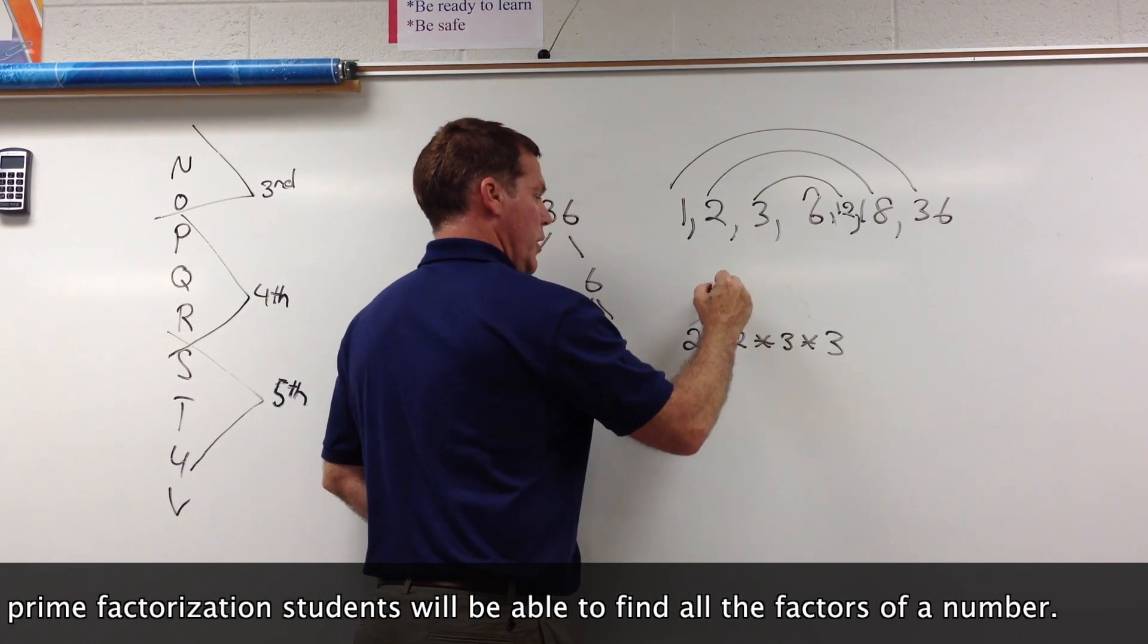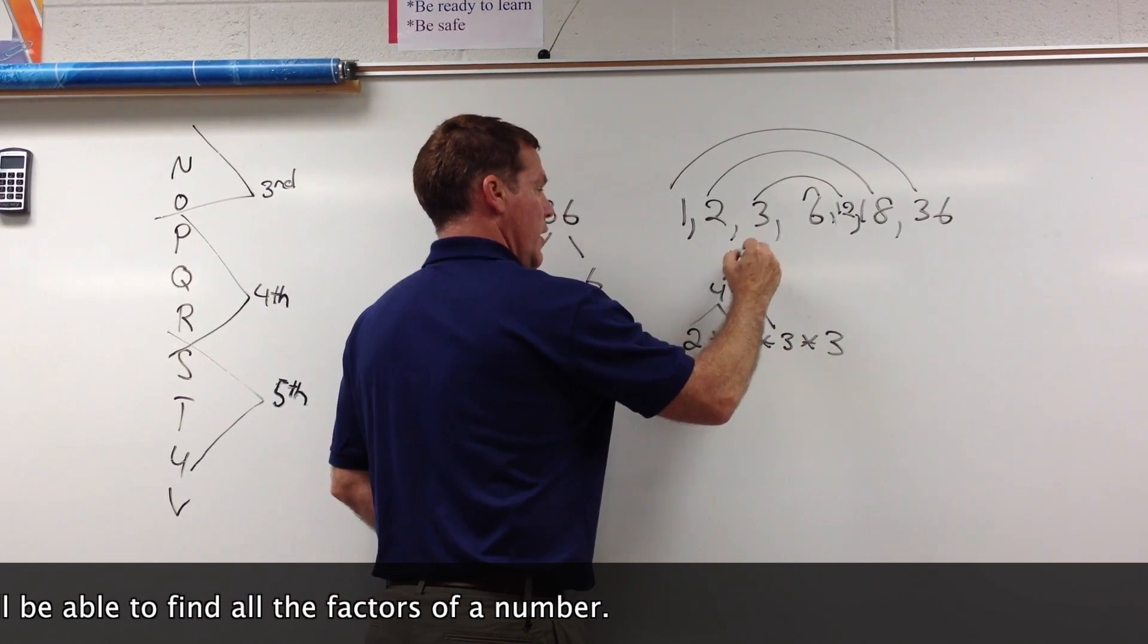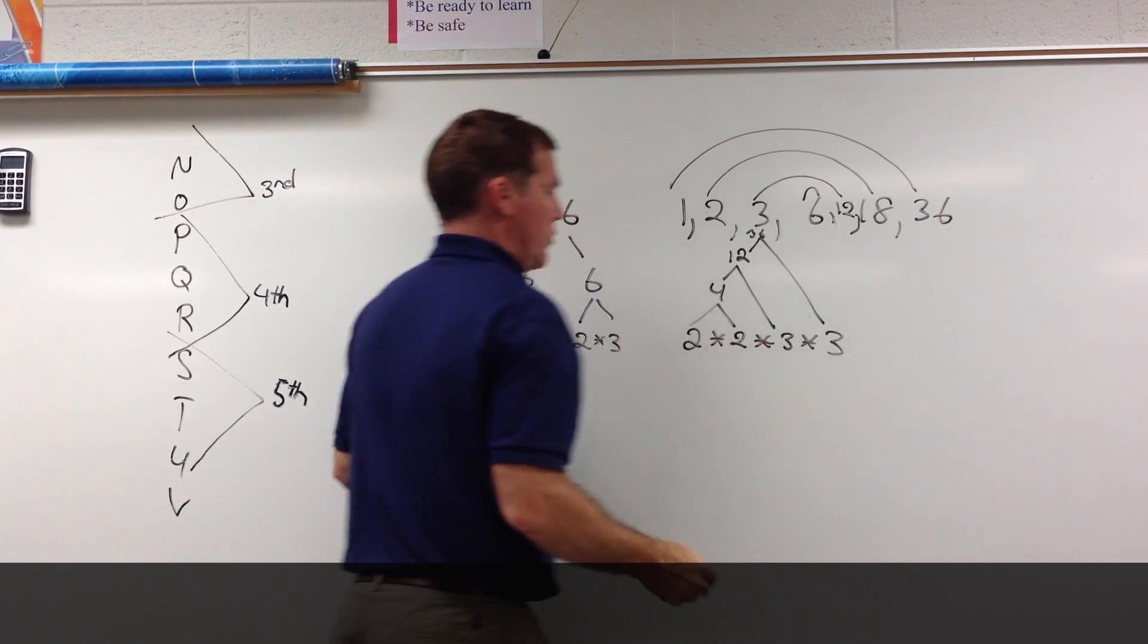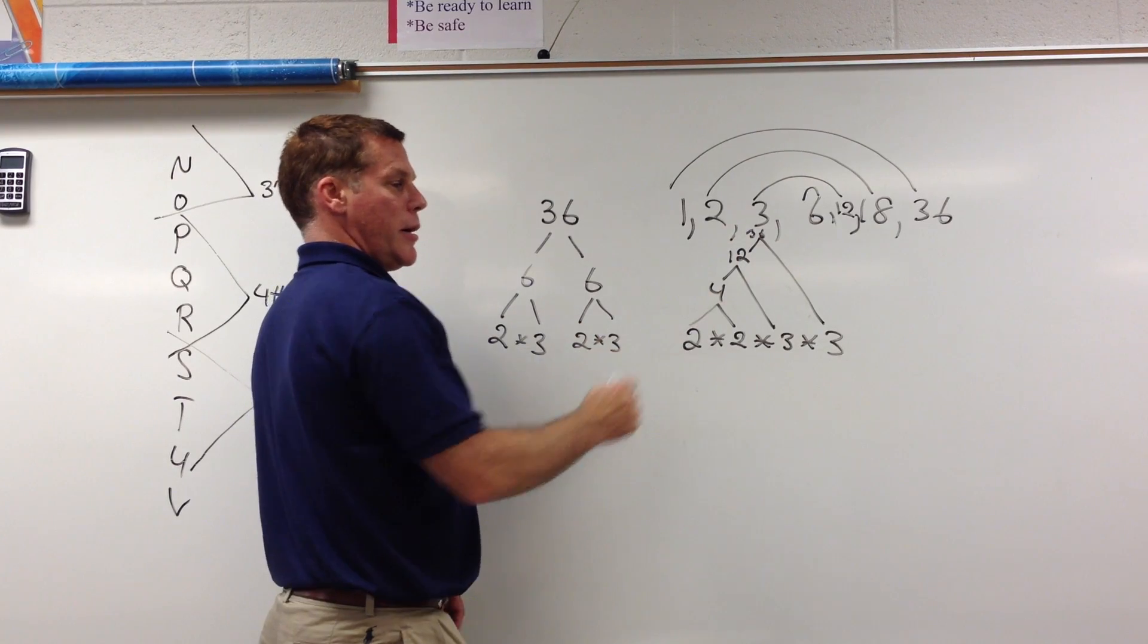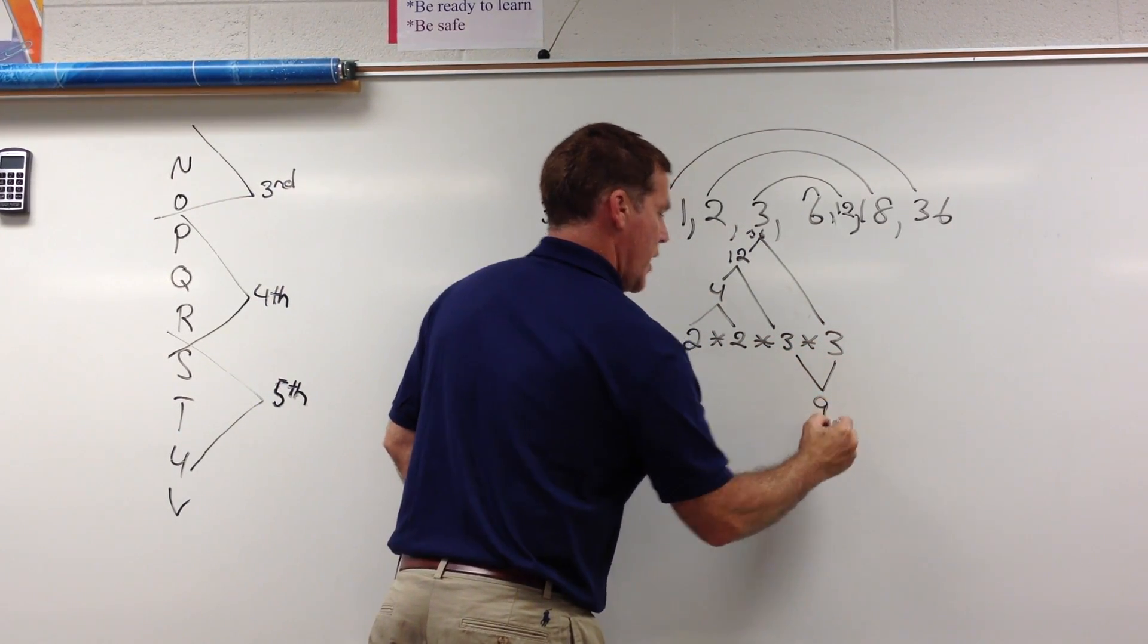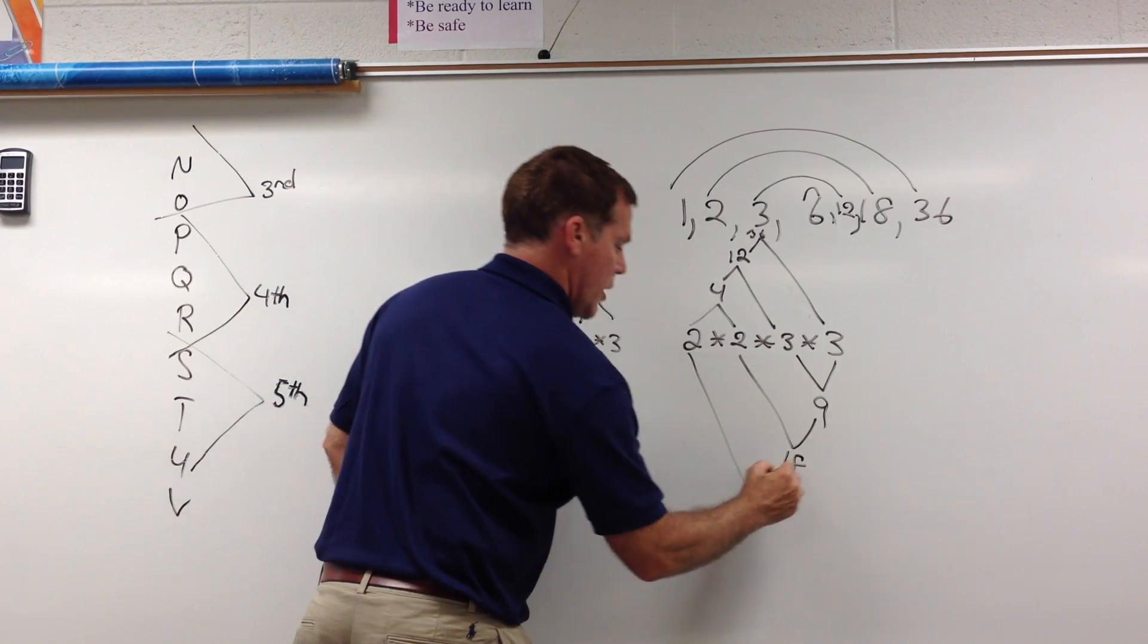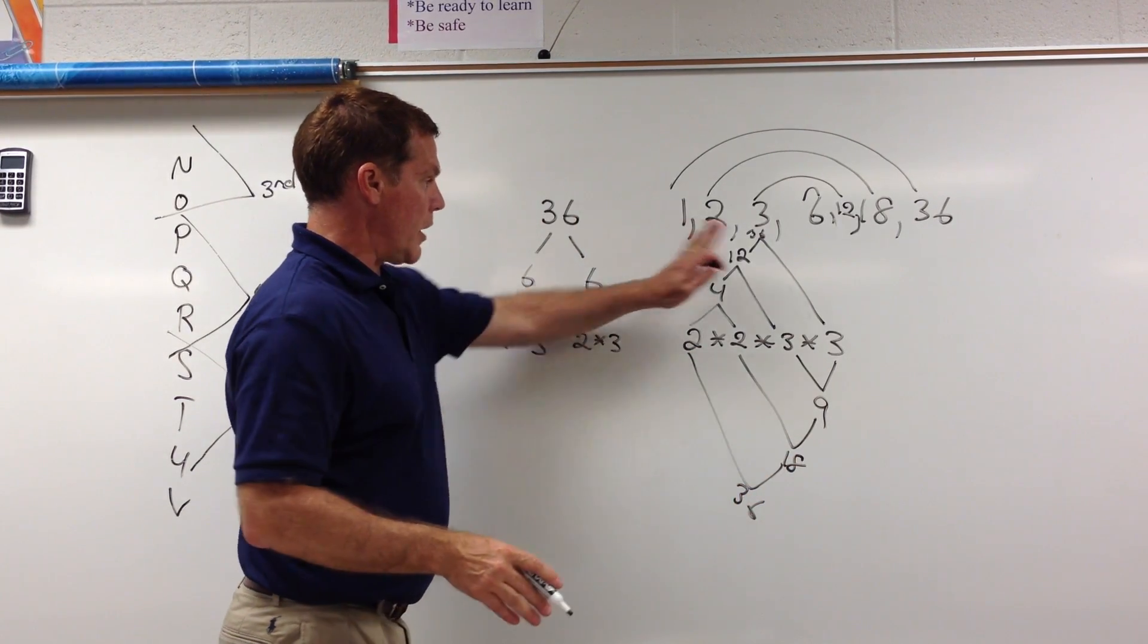2 times 2 is 4. 4 is a factor of 36. 4 times 3 is 12. 12 is a factor of 36, and 12 times 3 gives me my 36. I go from left to right on the top, I go from right to left on the bottom. 3 times 3 is 9. There's that missing 9 I was looking for. 2 times 9 is 18, and 2 times 18 is 36.